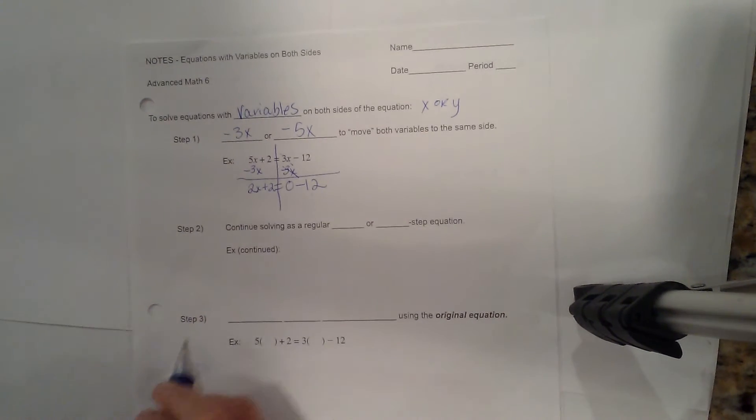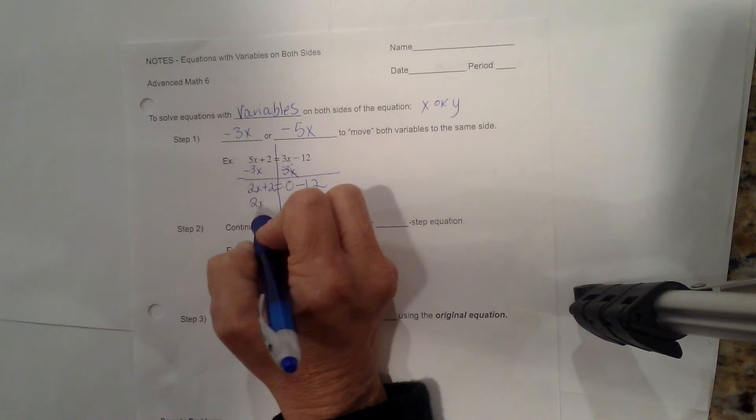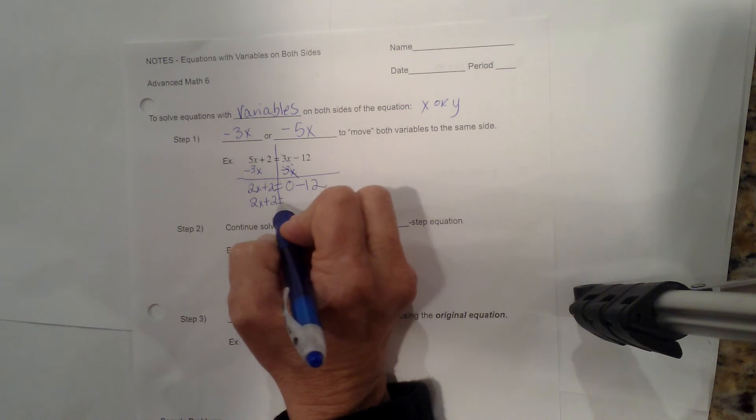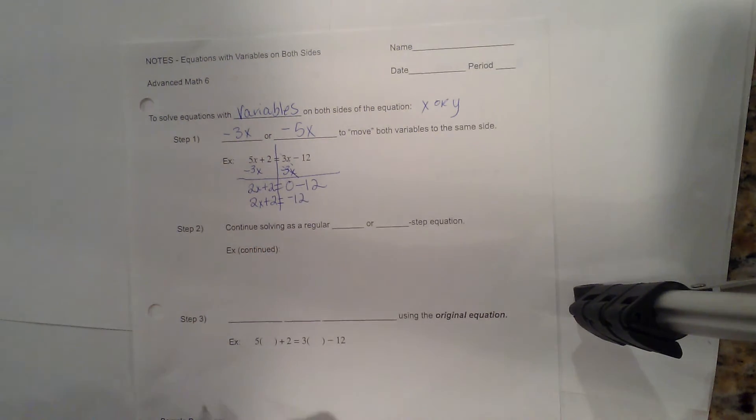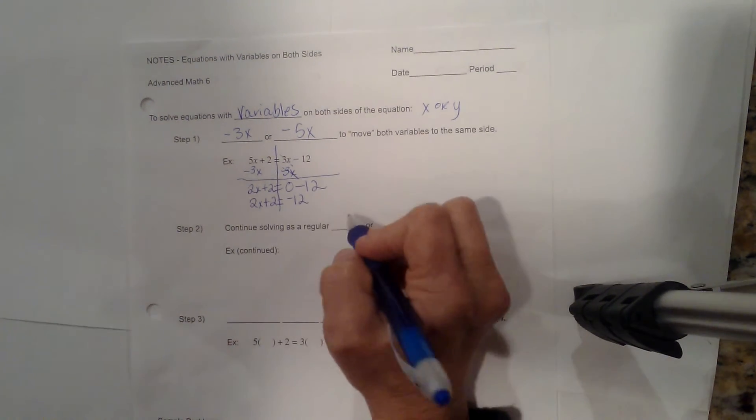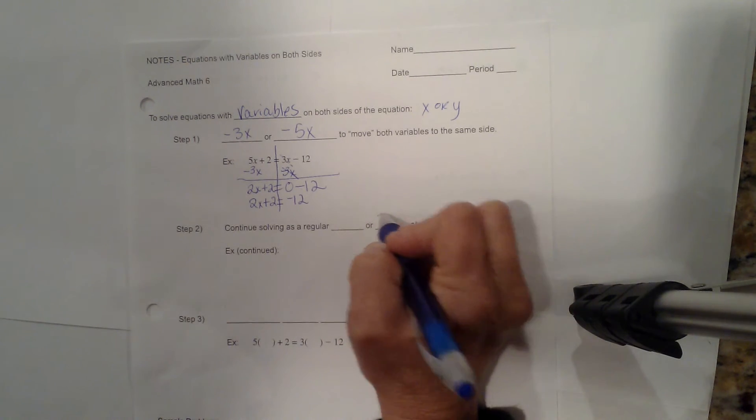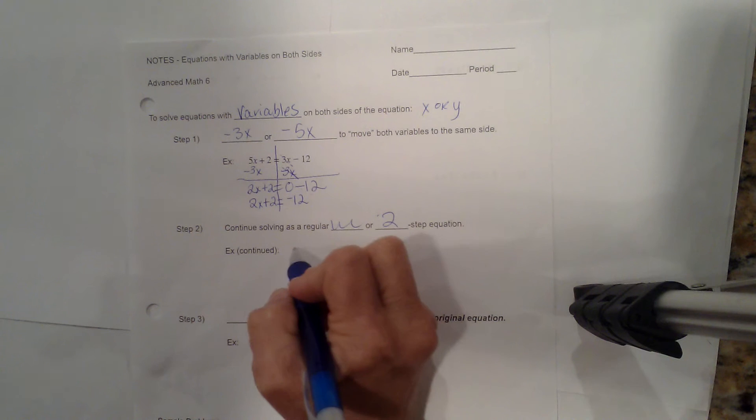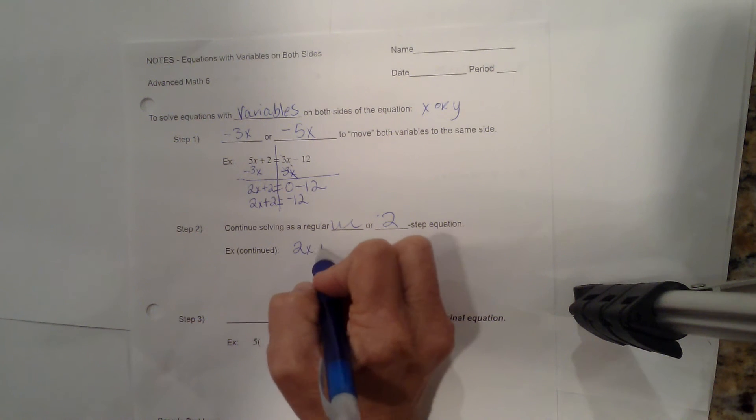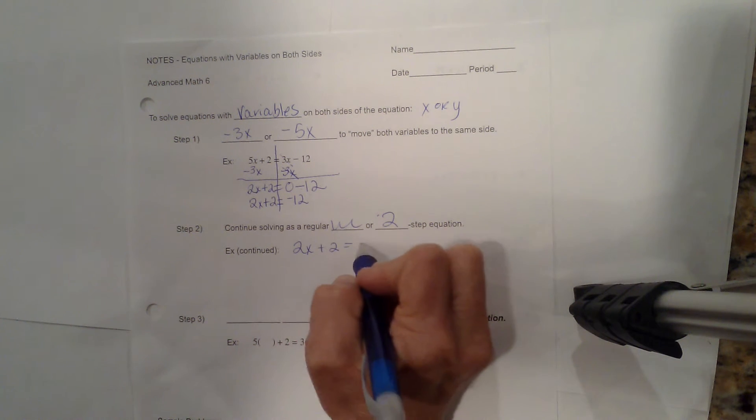So if you simplify this, it's actually 2x plus 2 equals, and then 0 minus 12 is negative 12. Now we're going to continue solving this as a regular, in this case, a 2-step equation. So let's do this as a 2-step equation. We've got 2x plus 2 equals negative 12.